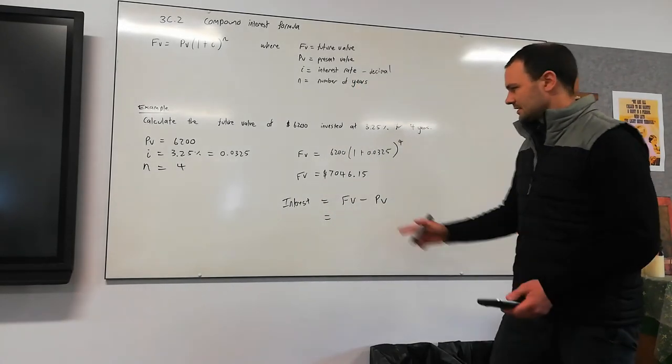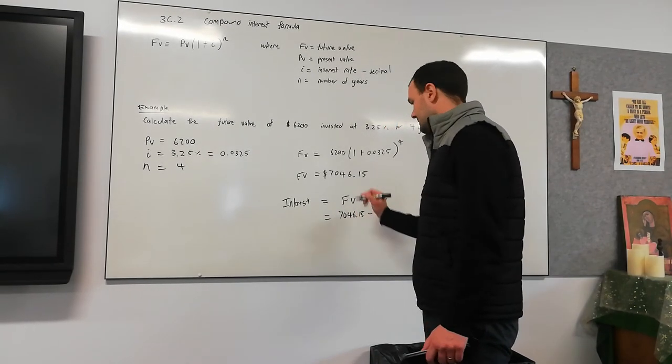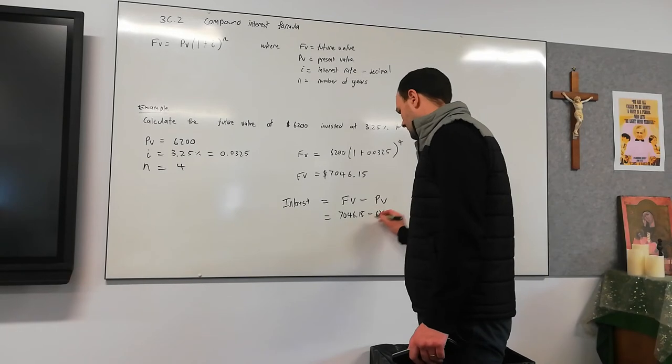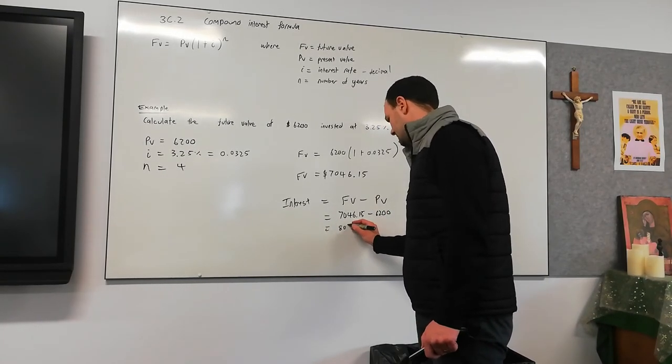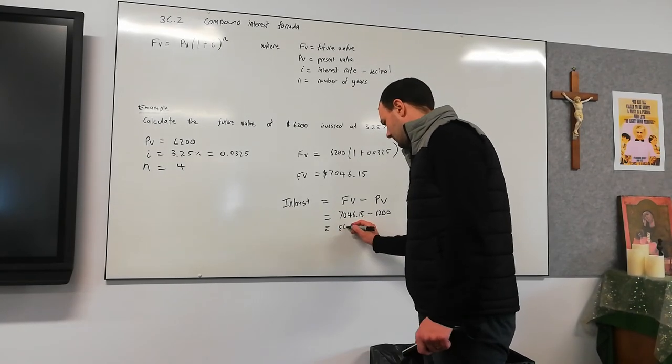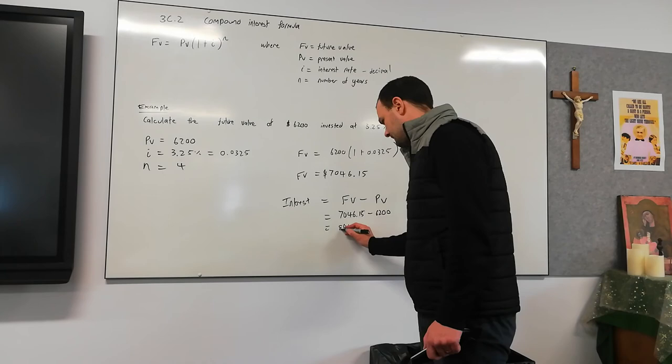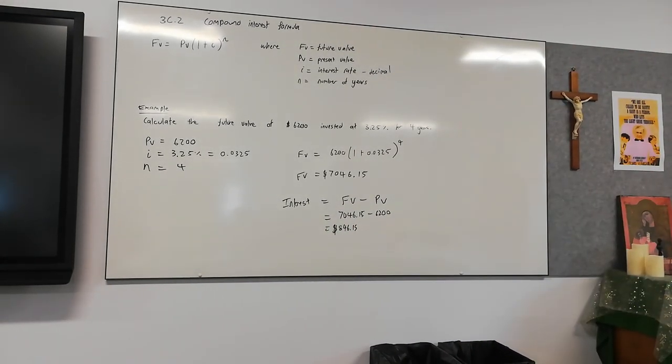Alright, so that's $7,046.15 minus $6,200. And we've got $846, excuse me, $846.15, which would be the interest earned on the investment. Okay, so that's section 3C.2.